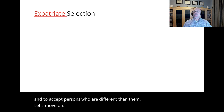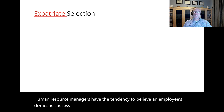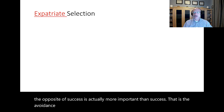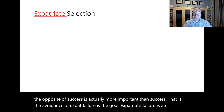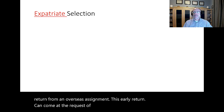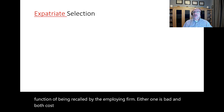Human resource managers have the tendency to believe an employee's domestic success will equal their overseas success. For expats, many times the avoidance of expat failure is actually more important than success itself. Expatriate failure is an early return from an overseas assignment — this can come at the request of the expat living abroad, or it can be a function of being recalled by the employing firm. Either one is bad and both cost money. Thus, the identification of those least likely to fail is usually the goal.